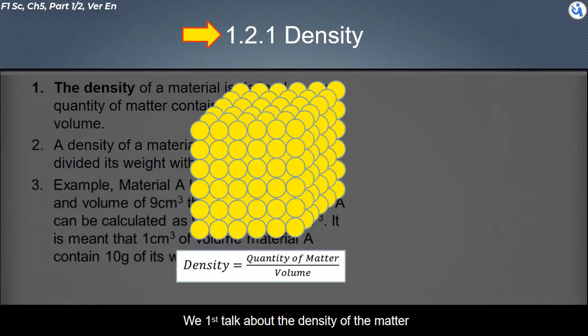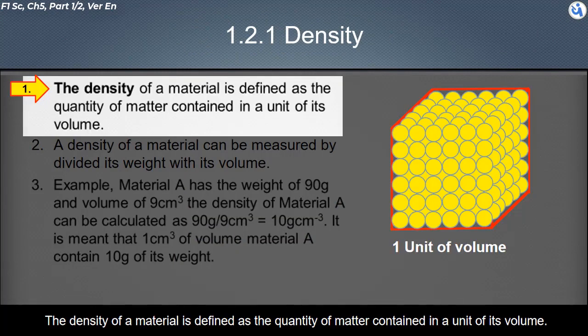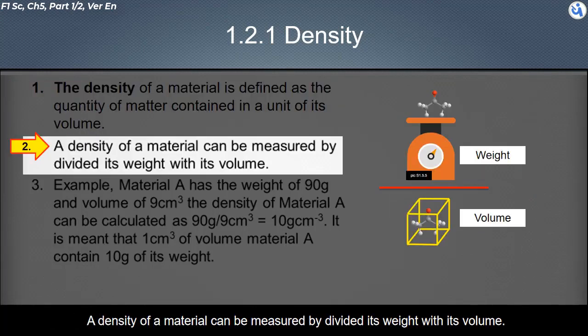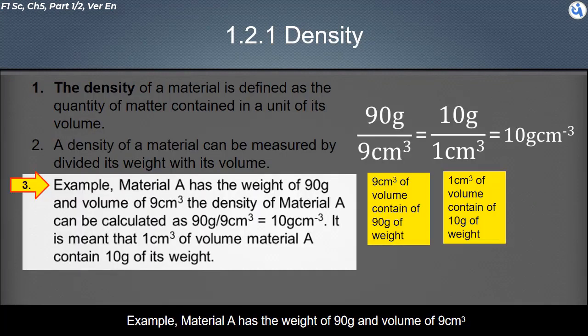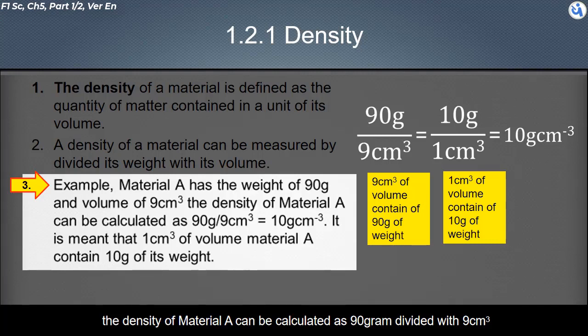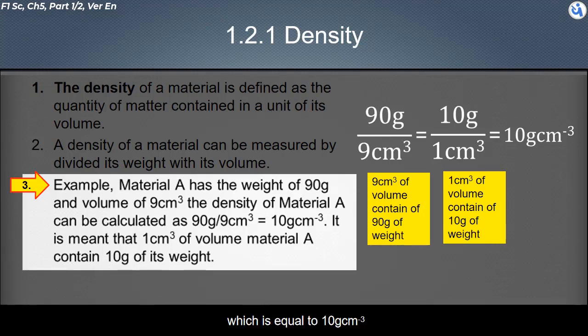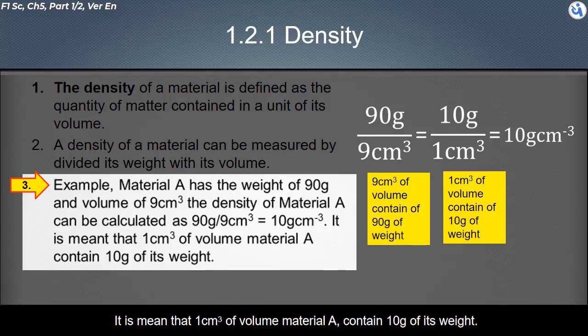We first talk about the density of matter. The density of a material is defined as the quantity of matter contained in a unit of its volume. Density is calculated by dividing its weight by its volume. For example, material A has a weight of 90 g and a volume of 9 cubic centimeters. The density of material A is 90 g divided by 9 cubic centimeters, which equals 10 grams per cubic centimeter. This means one cubic centimeter of material A contains 10 grams of its weight.